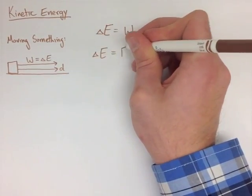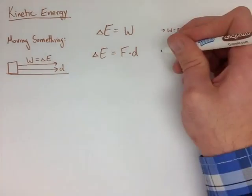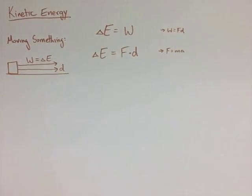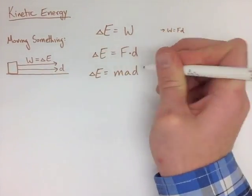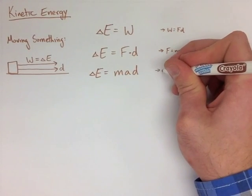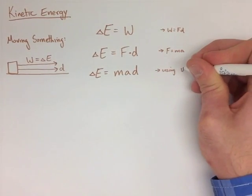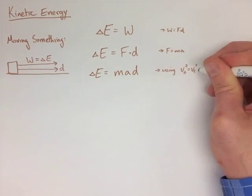So we have change in energy equals work, and work is always force times displacement. When we're moving, our force is always mass times acceleration, which we learned from our last unit. So we get our change in energy equals mad, or M-A-D.